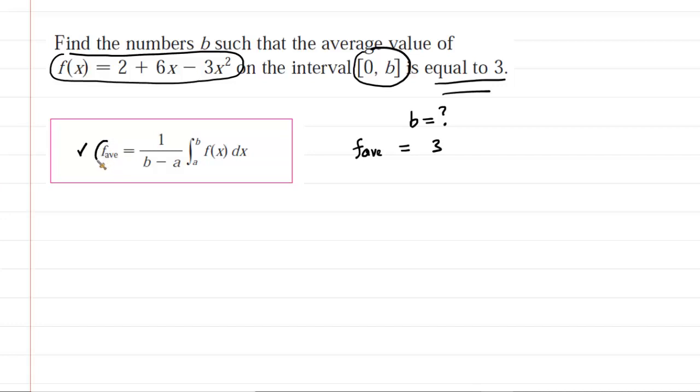So what we're going to do is actually plug 3 right in there for the average value, and we're going to set this equal to 1 over our upper limit, which is b. We don't know that, minus this a. Now, a is simply the lower limit. So in this case, the lower limit is 0.